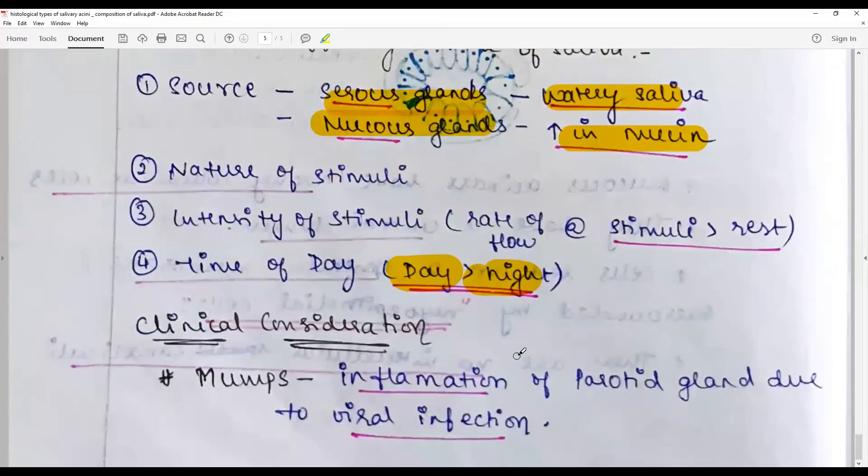Clinical consideration: inflammation of glands is mumps, infection can lead to less secretion of saliva or xerostomia - dry mouth. Damage to the salivary acinar duct, damage to the acini - all these are the clinical significance you need to talk about.